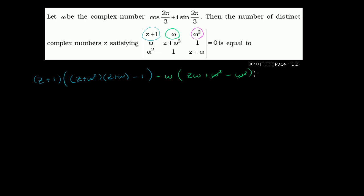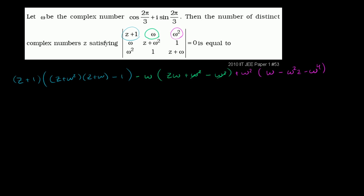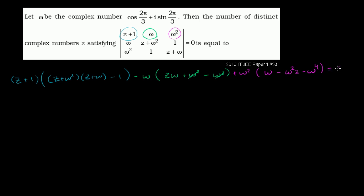Plus ω² times (ω times 1), which is ω. Minus ω² times (z + ω), giving minus ω²z minus ω⁴. This whole expression needs to equal 0. Let's see if we can simplify it further.